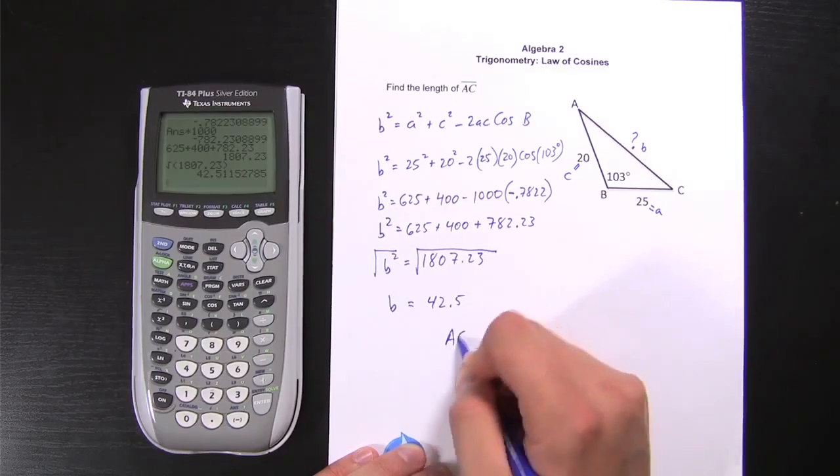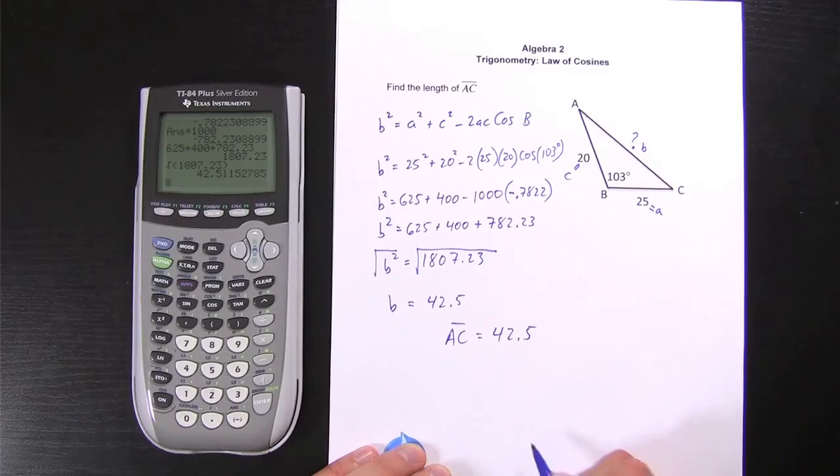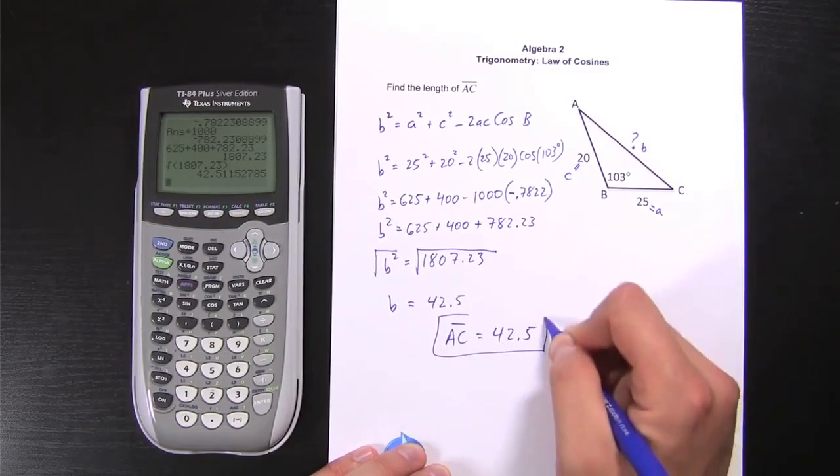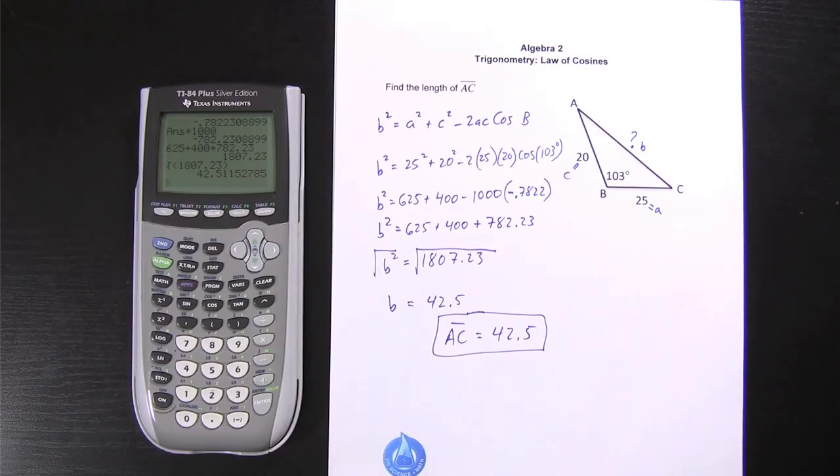So, in the end, AC is equal to 42.5. And that, my friends, is your final answer. If you need more practice, feel free to watch another video. Otherwise, I'll see you next time.